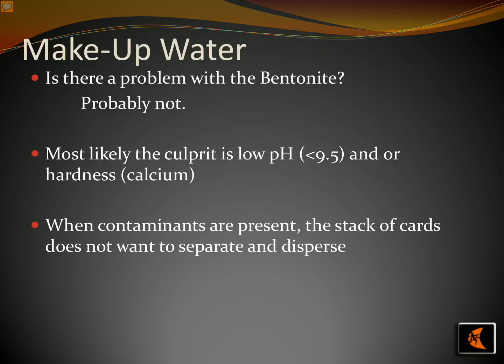When it comes to bentonite mining, if the pH is too low or the hardness is too high, it can cause problems with layering as the material won't be able to separate and disperse correctly, resulting in the layers not stacking properly. To address this issue, makeup water is used which has been treated to a specific pH and hardness level, ensuring that the bentonite is consistently between 35,000 to 40,000 layers.